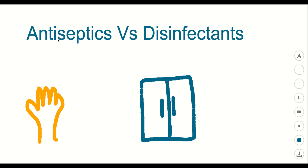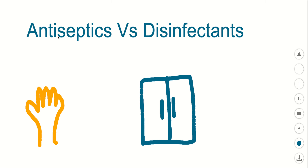In this video I want to talk briefly about the difference between antiseptics and disinfectants. An antiseptic is going to be something we apply to the body or a living animal. We're not trying to kill the living thing — we're not trying to kill our hands or ourselves. We're trying to get rid of sepsis, or bacterial infection, or bacterial causes on it.